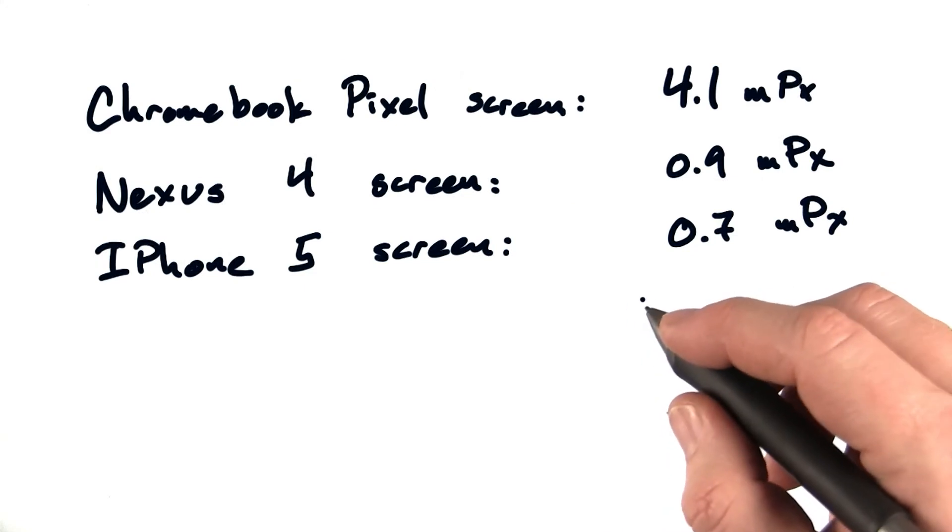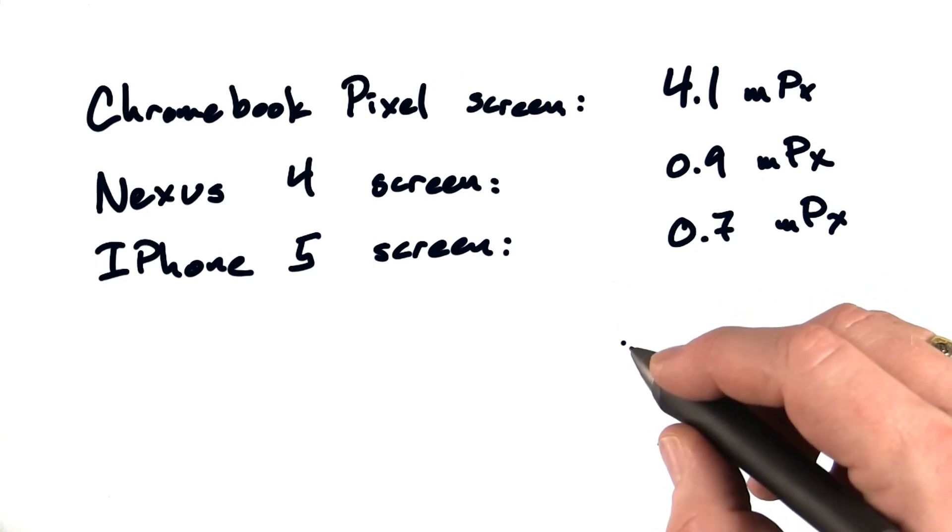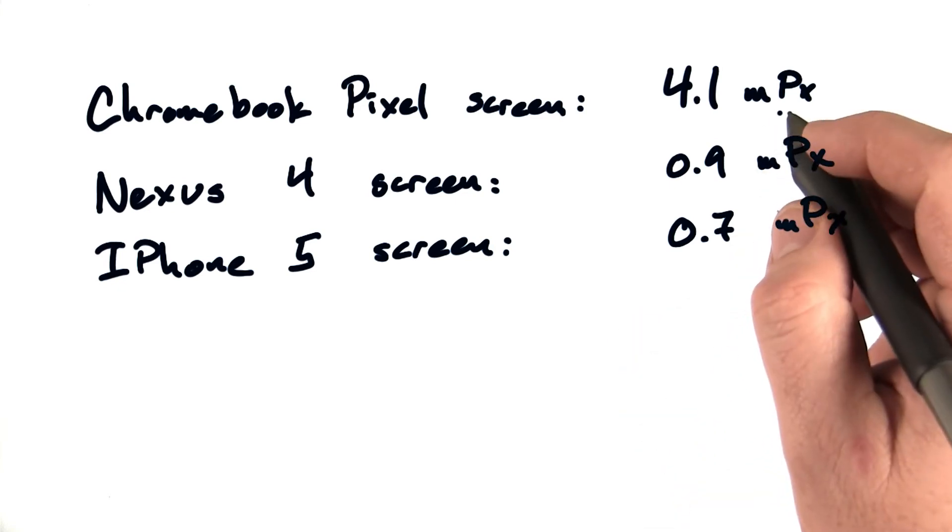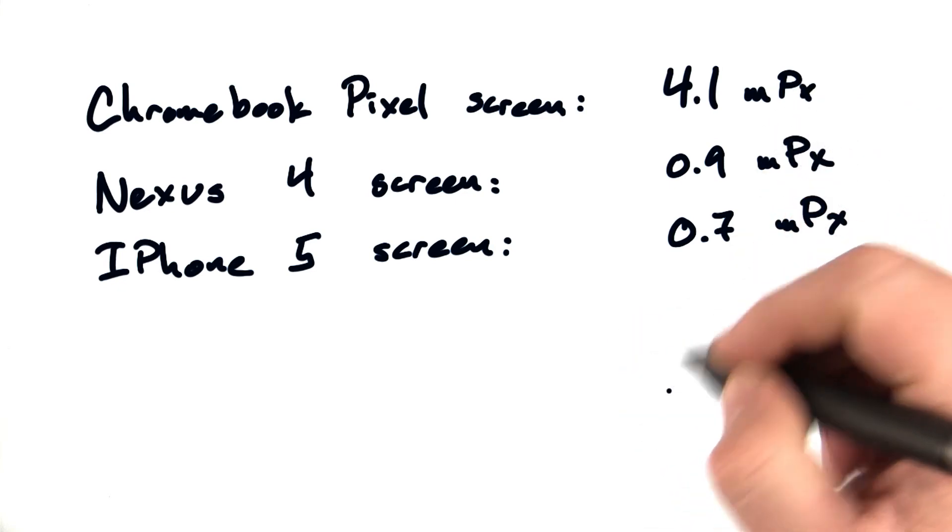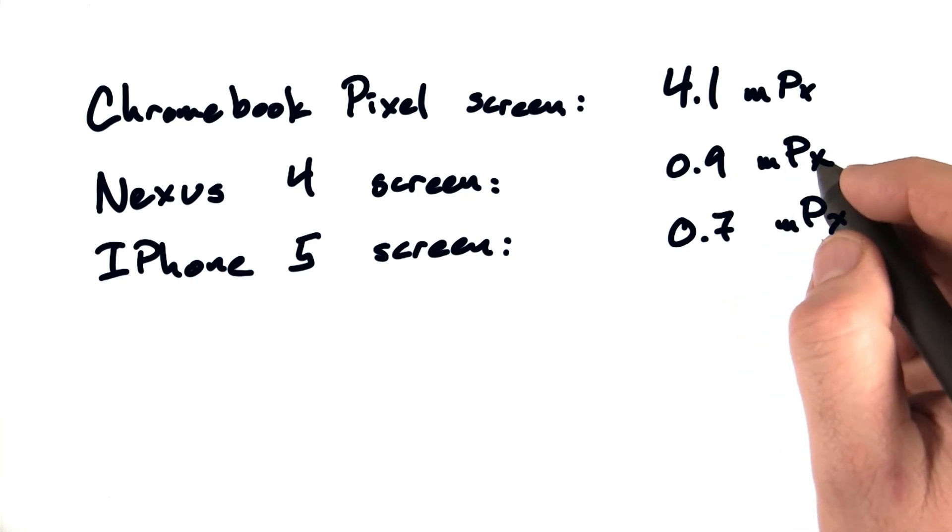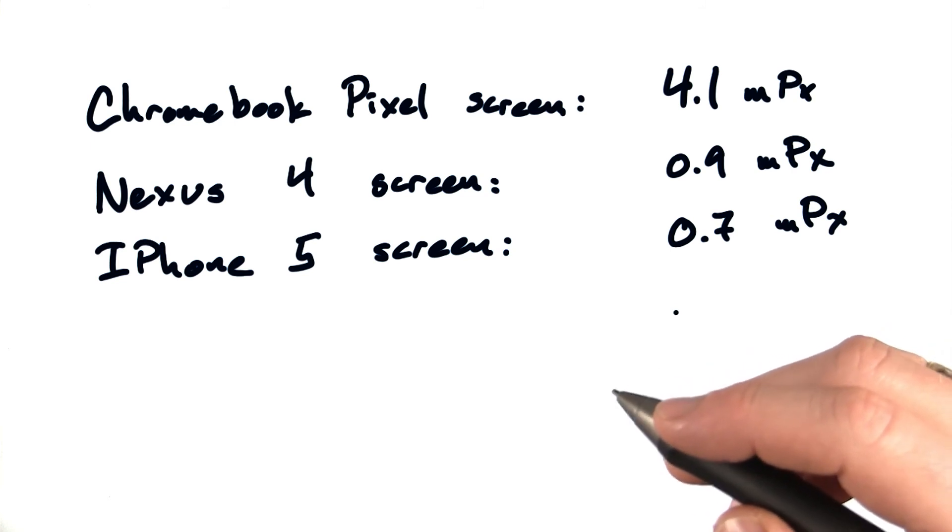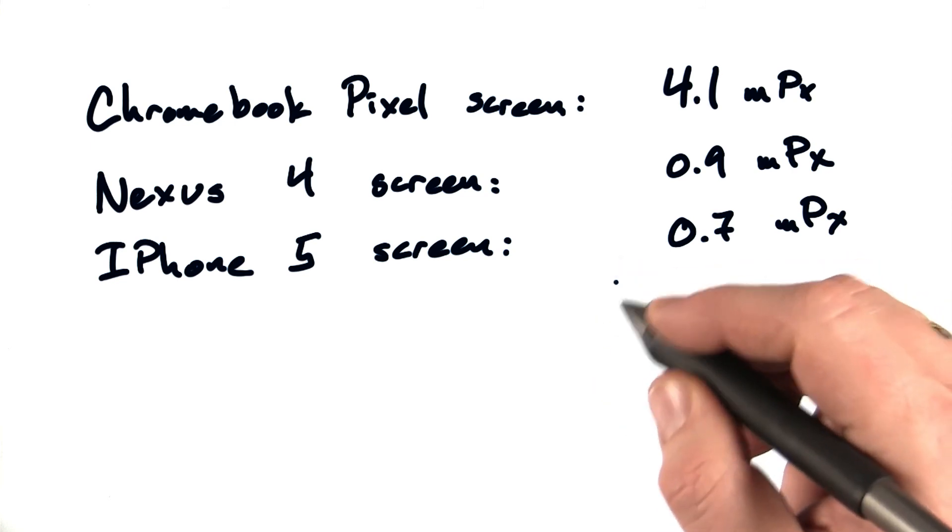If you didn't care about bandwidth, you could just serve massively large images all the time. But a full screen image for a Chromebook Pixel is 4.1 megapixels, whereas on a Nexus 4 it's only 0.9 megapixels. iPhone 5 is only 0.7. The best size for images is very different on each of these devices.